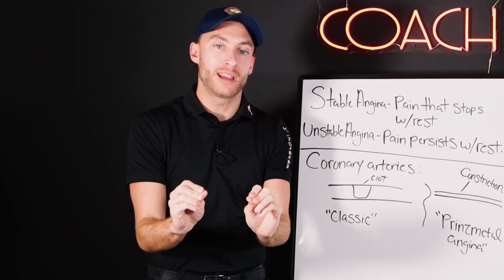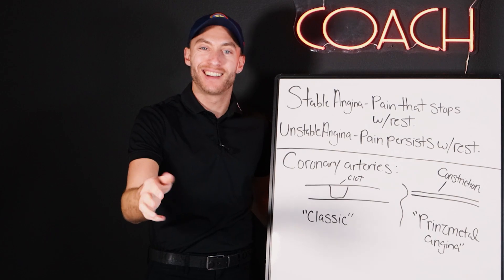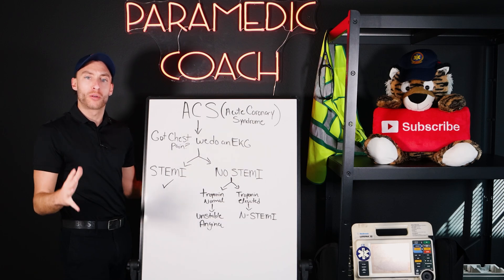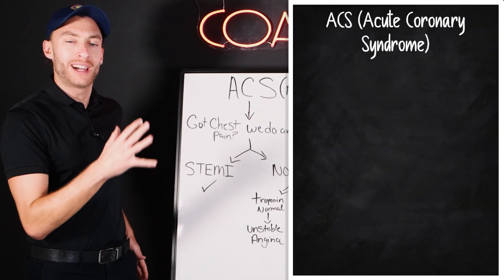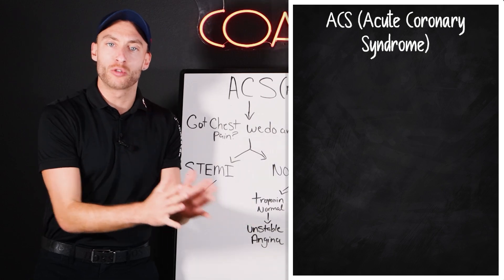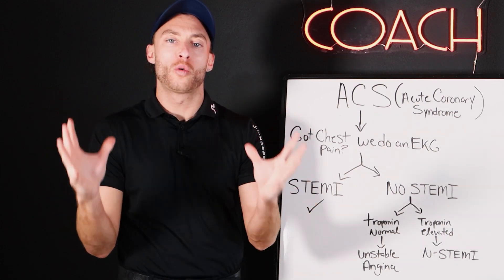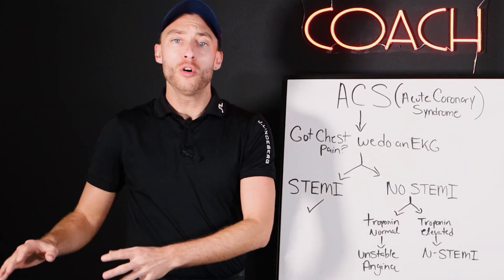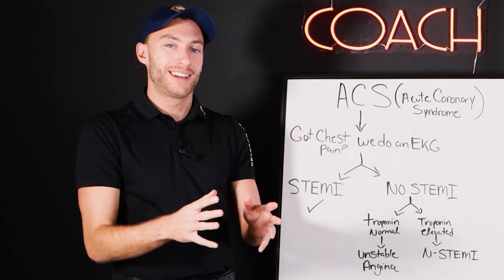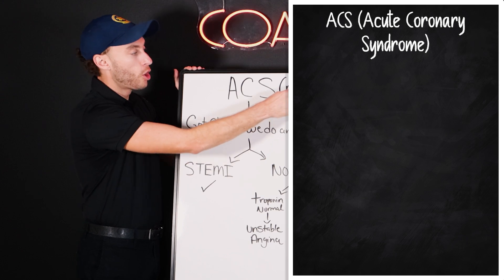Now we're going to talk about ACS, STEMI, and NSTEMI — investigating a patient with unstable angina to determine how bad it is. ACS stands for acute coronary syndrome. Anybody having a problem with their coronary artery, whether it's stable or a full-blown myocardial infarction, falls under the umbrella term ACS — something is happening acutely right now to your coronaries.